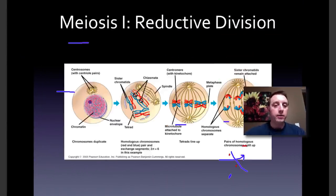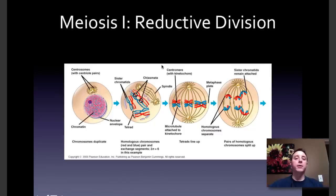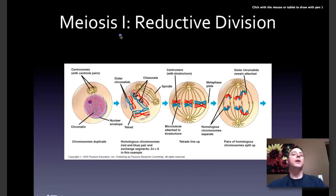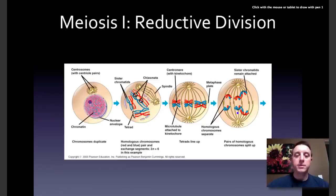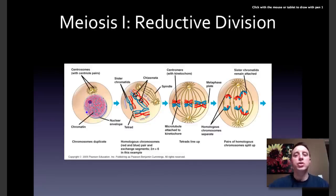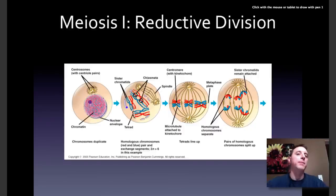Let's talk about meiosis. Meiosis occurs in two sets of cell division. This first one here is meiosis I — the reductive division. We are starting with a 2N diploid cell and we're going to end up with haploid cells, so we're reducing the number of chromosomes. Just as in mitosis, the stages all have the same names, and a lot of the events in meiosis are very similar to what happens in mitosis.